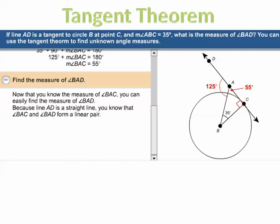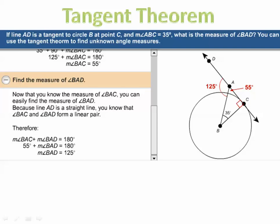Now find the measure of angle BAD. Since line AD is a straight line, angle BAC and angle BAD form a linear pair. Therefore the measure of angle BAC plus the measure of angle BAD equals 180. Plugging in 55, you subtract and find that angle BAD is 125 degrees.